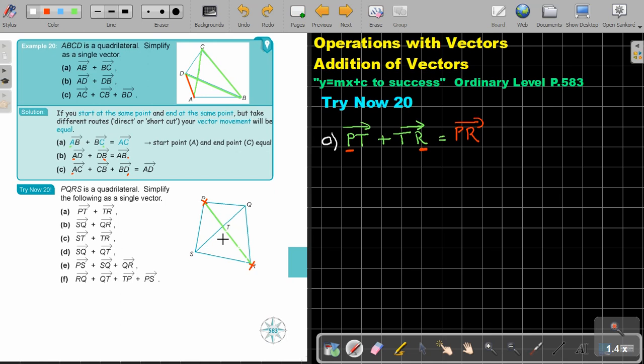Let's do the next one. Number B. Let's take another color, so it's going to be SQ plus QR. The final result is going to be from S to R, from the beginning till the end. Let's see if we are correct: S, final letter R.